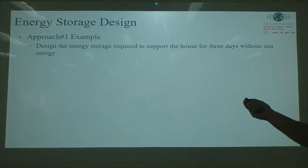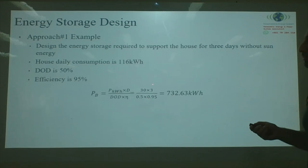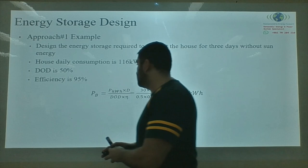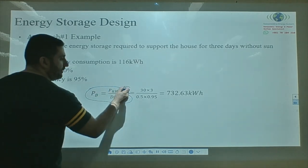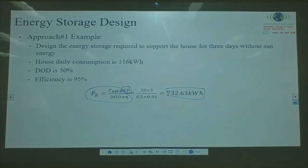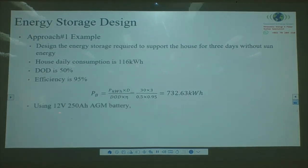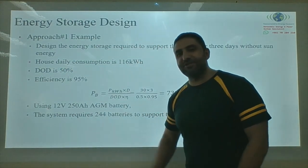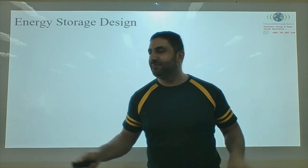Approach one example: design energy storage to support a house for three days without sun. The house daily consumption is 116 kWh, DoD is 50%, efficiency is 90%. Applying the equation and multiplying by three gives 732.63 kWh required for the batteries. Using 12V 250 Ah AGM batteries, the system requires 244 batteries. At $300–$400 each, that is a massive cost for a residential project.